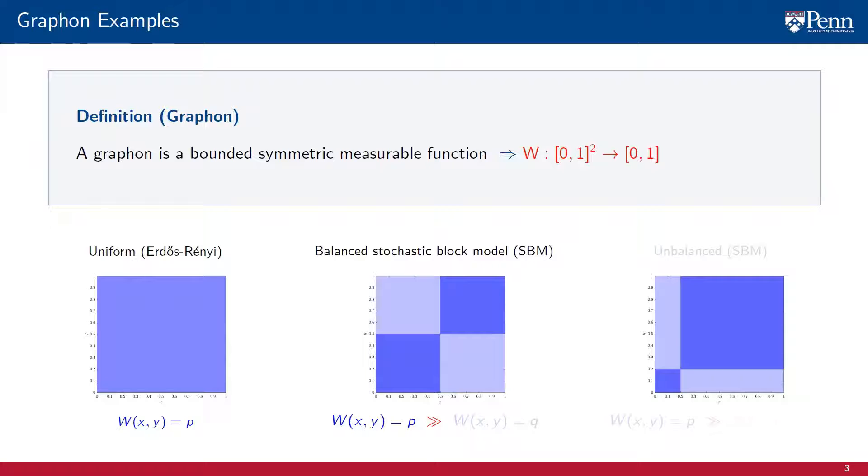A balanced stochastic block model graphon takes values w(x,y) equal to p when x and y are both between 0 and 1/2 or both between 1/2 and 1. This is signified by the dark blue areas in the figure. The SBM graphon takes values w(x,y) equal to q when either x or y are between 0 and 1/2 and the other argument, y or x, is between 1/2 and 1. This is signified by the light blue areas in the figure. The value p is much larger than the value q.